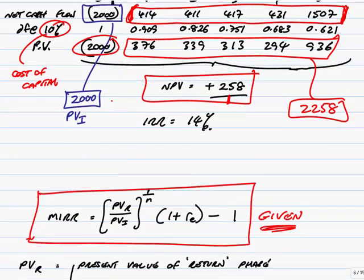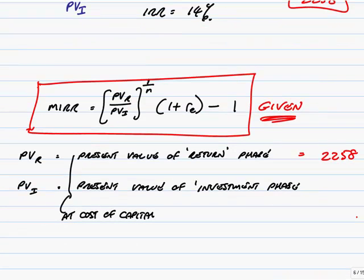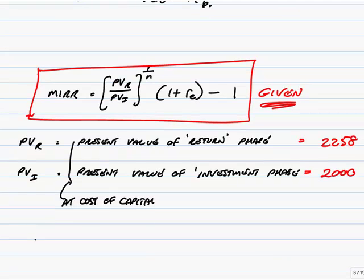Anyway, let's write that down. Present value of the return phase is 2,258. Present value of the investment phase was 2,000. What else do we need? In the formula, we've also got N. Well, N is simply the life of the project in years.